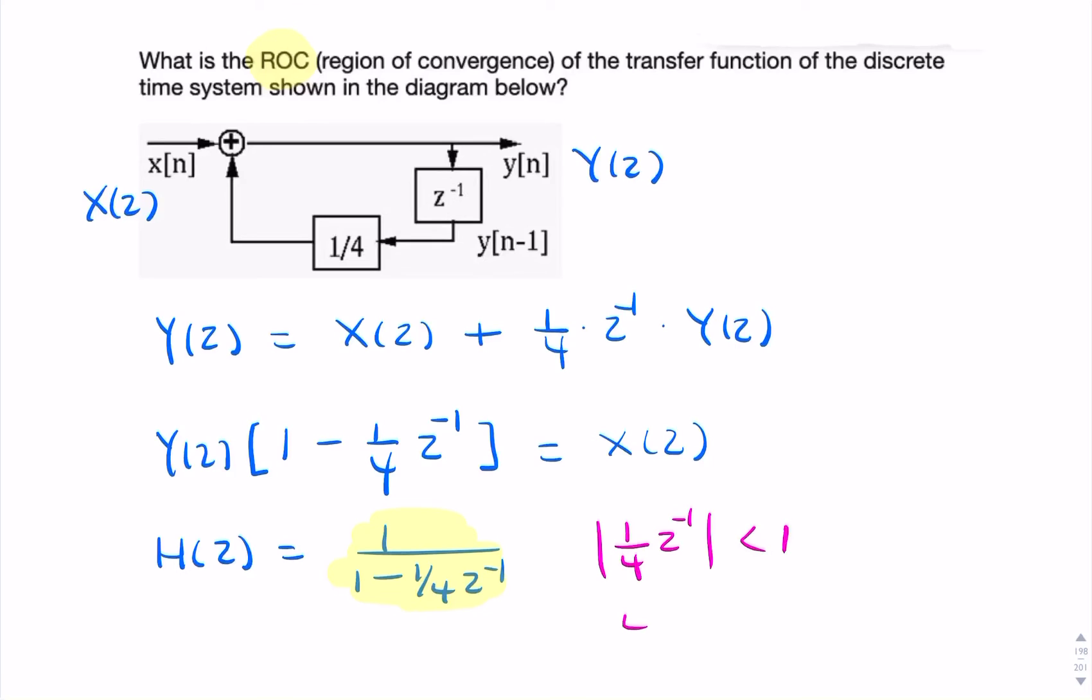That's the same as saying 4z is greater than 1. And that simply means that z is greater than 1 over 4. So that would be your region of convergence.